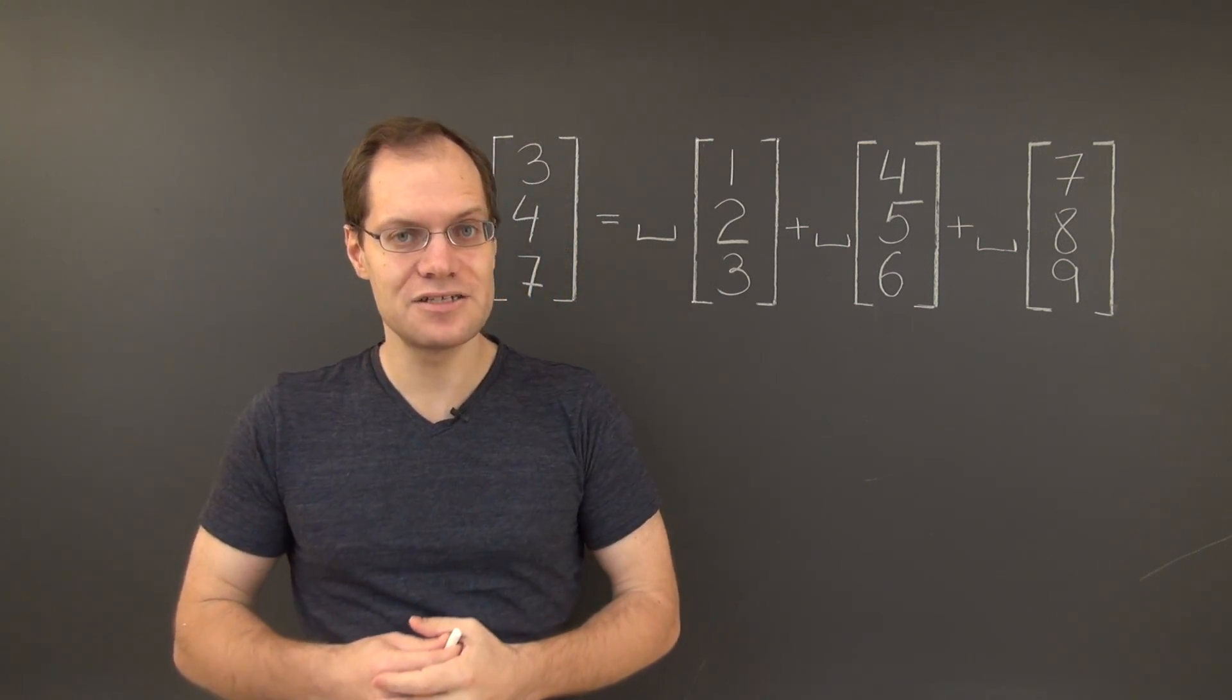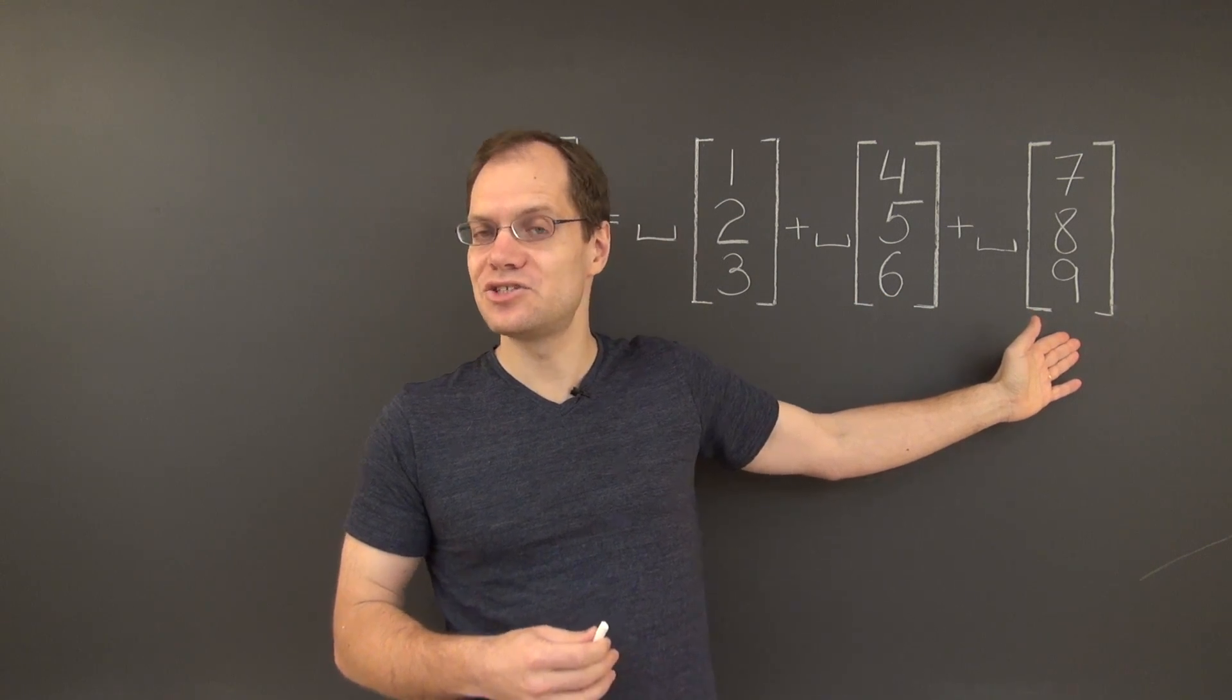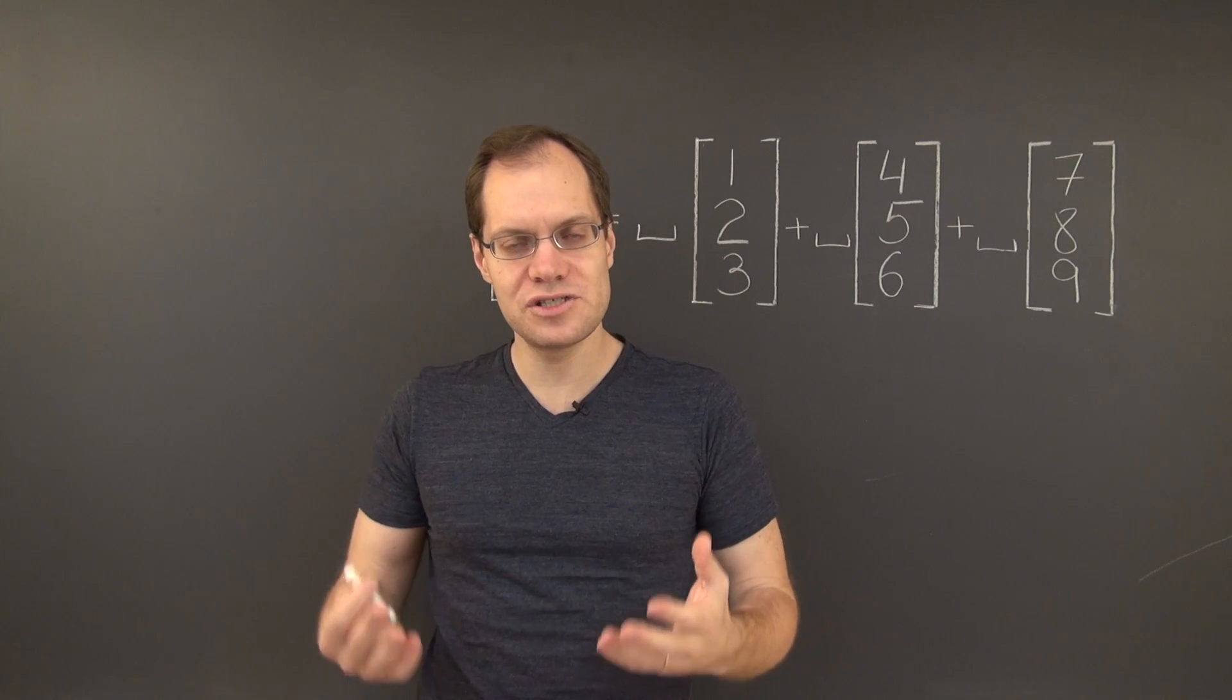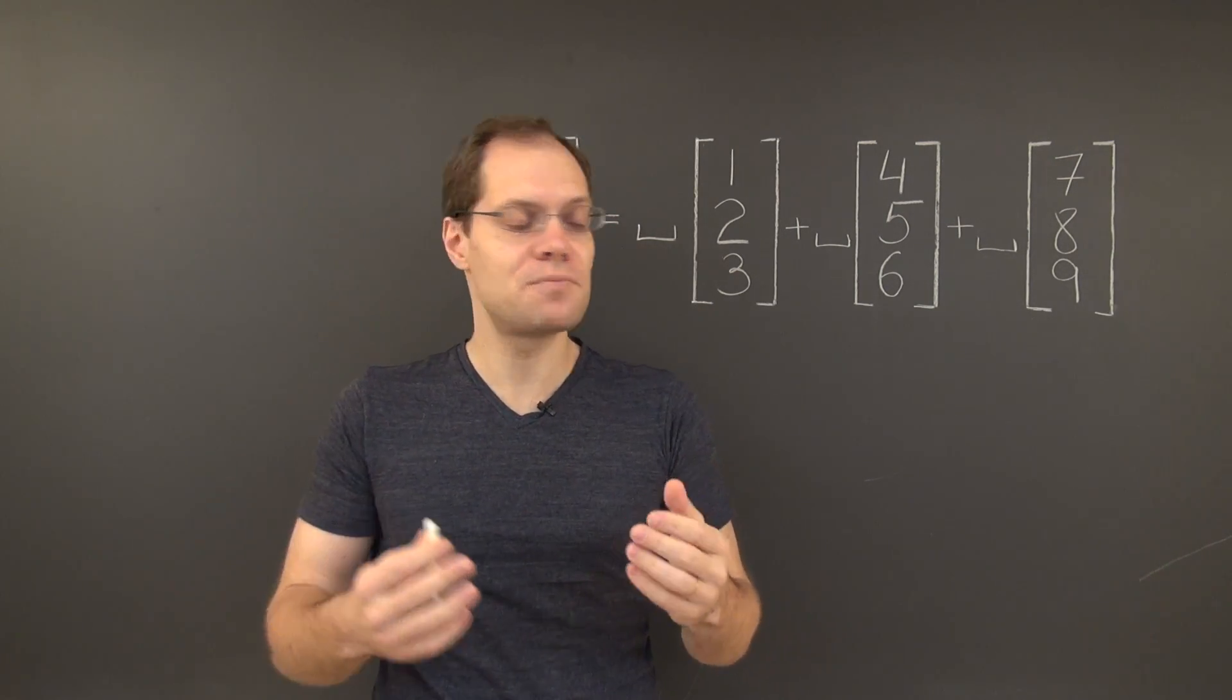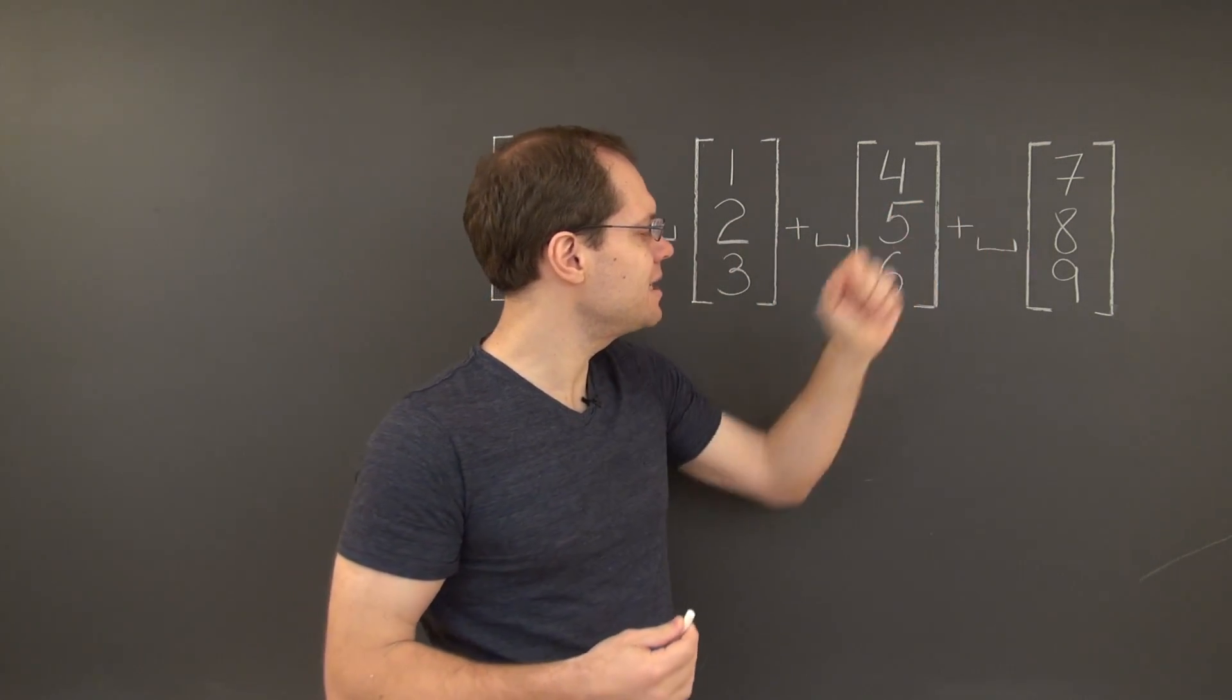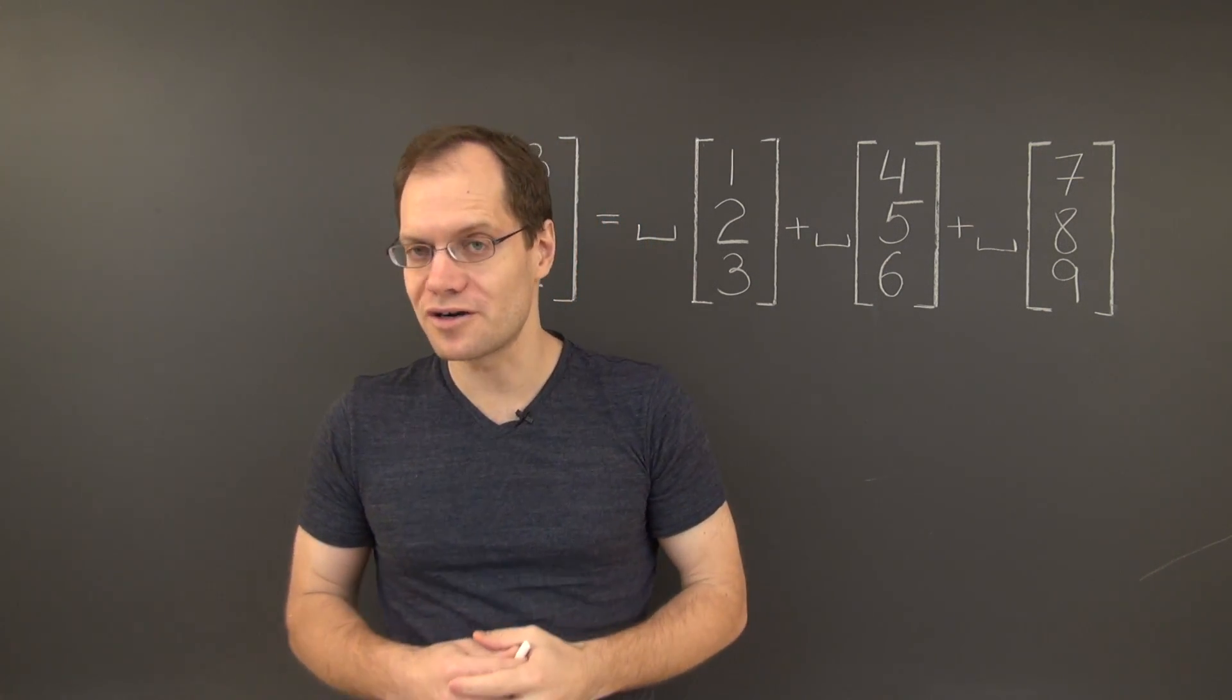While it is closed under addition, meaning that if we were to add any two vectors like this together, the sum would still have that property, it is not closed under multiplication by numbers. And it needs to be both because linear combinations have both addition and multiplication by numbers. So it has to be closed under both in order for the argument to work.